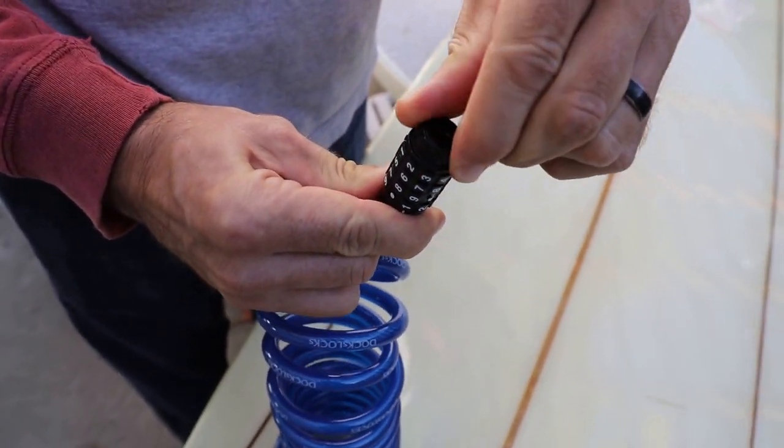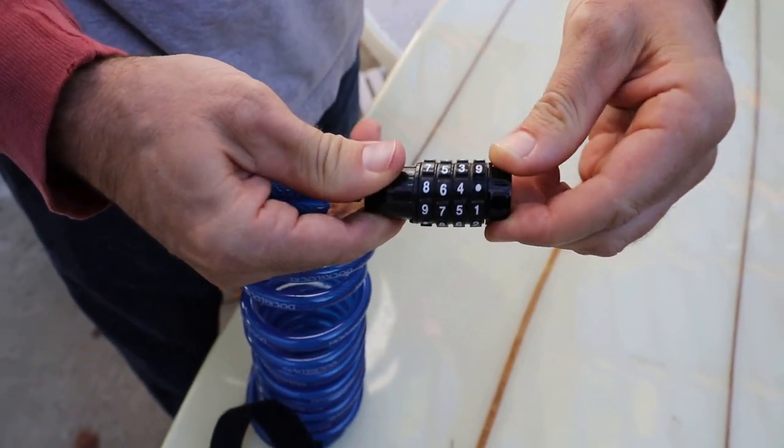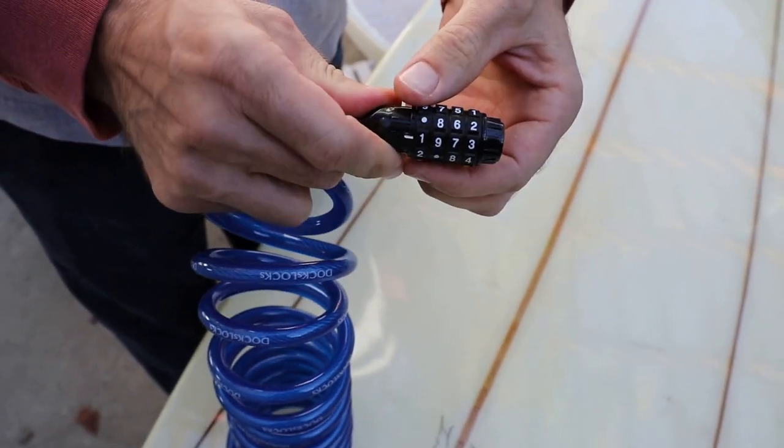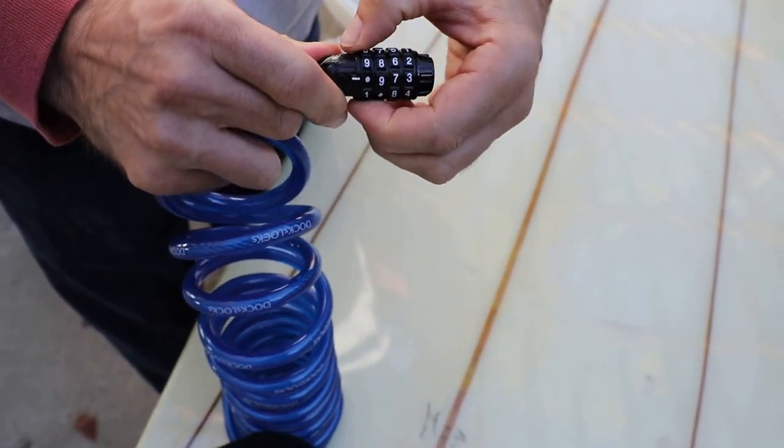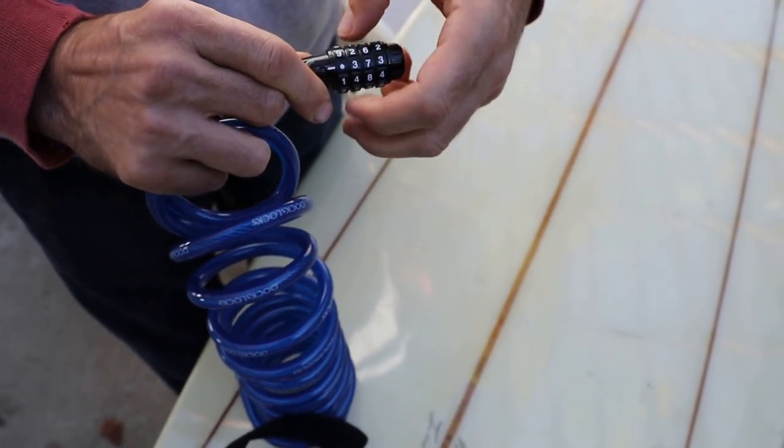Here's the important part. You want to turn it counterclockwise and then set whatever combination you want to make. So we'll just set ours to the zeros. I'll just go ahead and spin those.